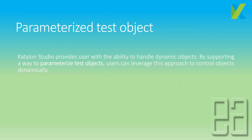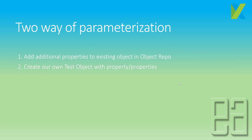Alright, let's get started. Katalon Studio provides the ability to handle dynamic objects by supporting parameterized test objects. Users can leverage this approach to control objects dynamically. There are two ways of parameterizing objects: one is by adding additional properties to an existing object in the object repository, and the other is creating your own test object with a property or set of properties.